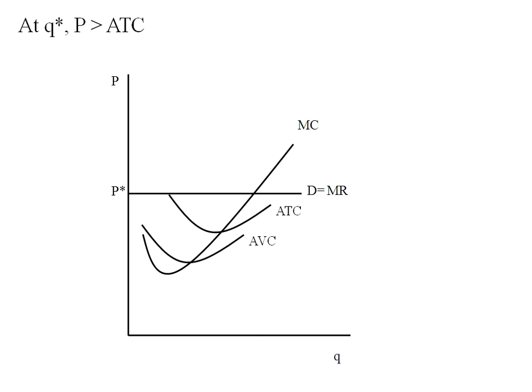I find the level of output where MR equals MC. I'm going to label that Q star. Now at Q star, I find ATC, and I go over to the vertical axis. That's my ATC. And since price is greater than ATC, that becomes my profits.